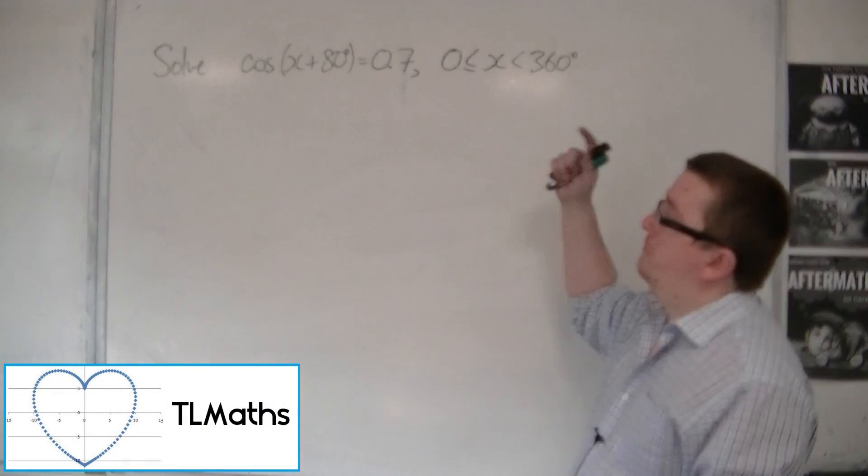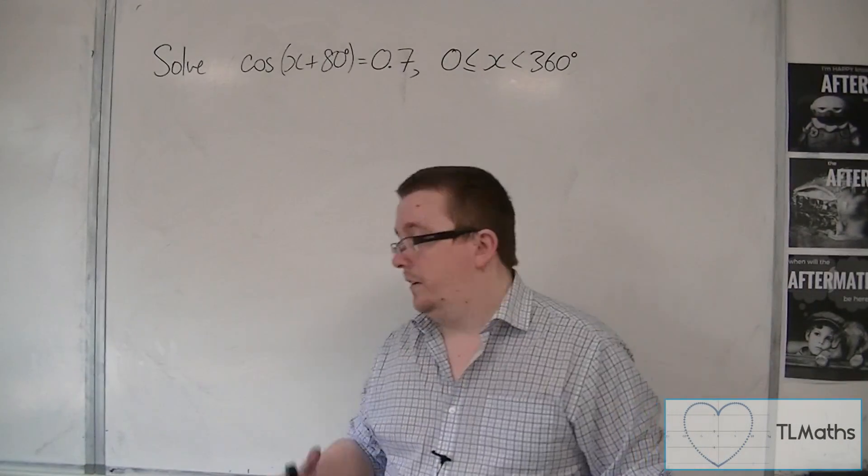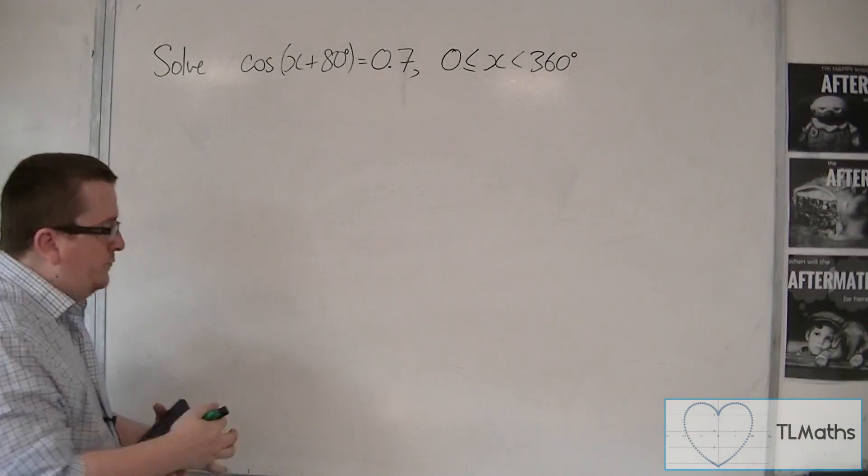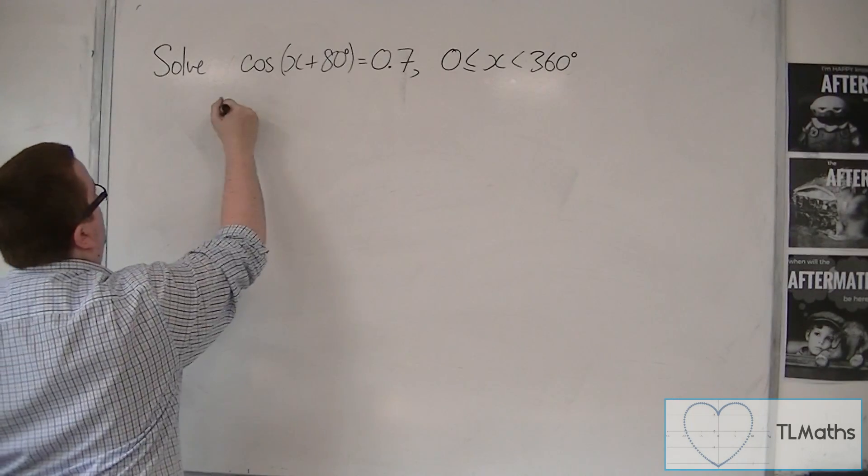Let's say I want to solve cos of x plus 80 degrees equals 0.7 between 0 and 360. For this one, I'm going to inverse cos both sides to start off with.